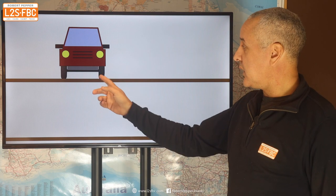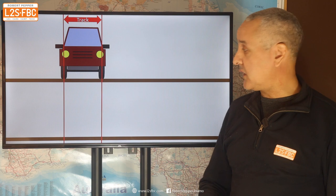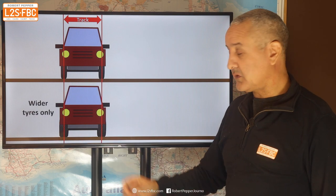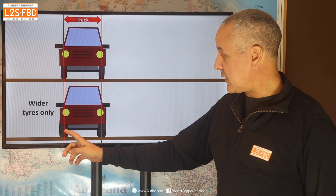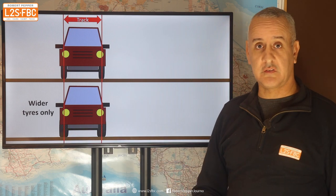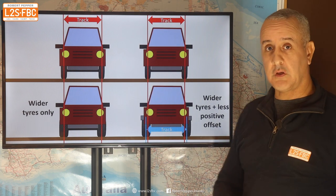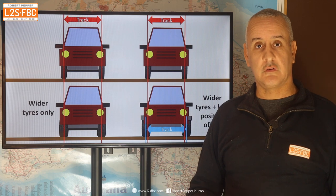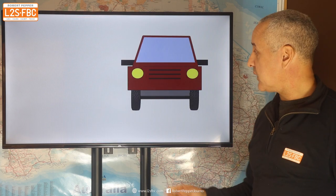A couple of examples. Here's our car — track is halfway between the tyre centre lines. We fit wider tyres only: the centre line does not change, so there's no effect on the track, but the tyre expands the same amount each way, leaving the centre line the same. Then we take that same car, fit those wider tyres, but also change to a less positive offset — and that has the effect of widening the track.